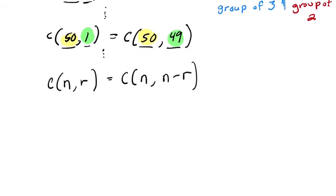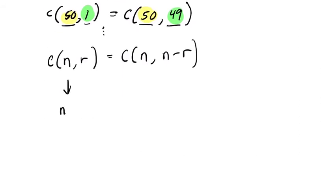But let's prove that algebraically. On this side of the equation, we have n factorial over r factorial and n minus r factorial. On the other side, we have n factorial over, not r factorial, but n minus r factorial, and n minus n minus r factorial.